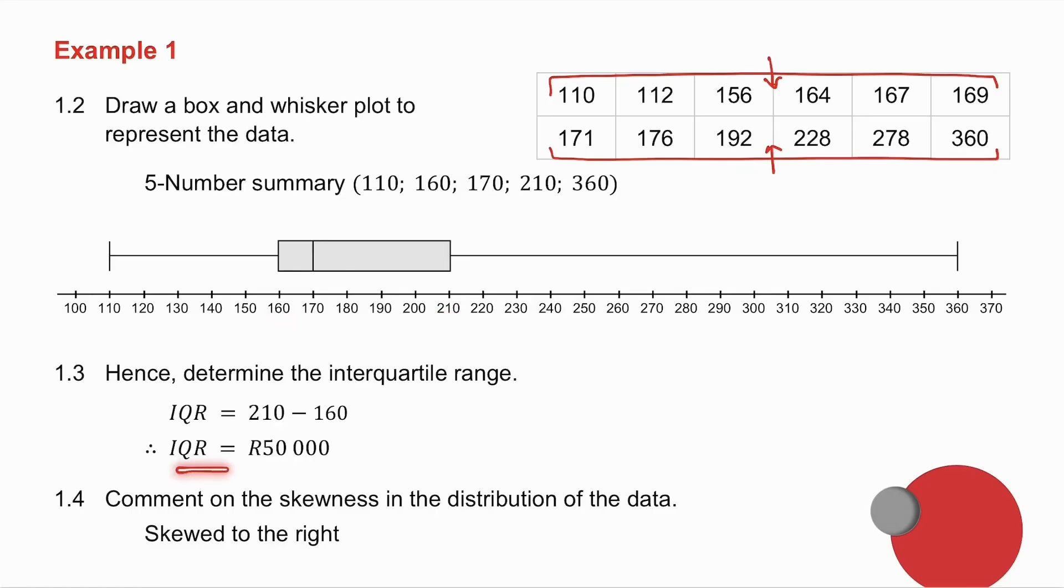1.4 asks you for skewness. You will notice that the data is far more spread out to the right, which means the data is skewed to the right.